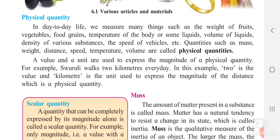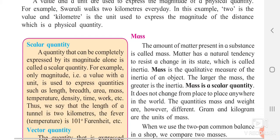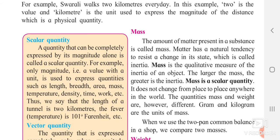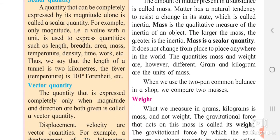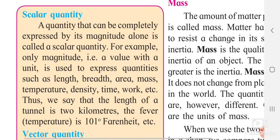These quantities are divided into two main types: scalar quantity and vector quantity. A quantity that can be completely expressed by its magnitude alone is called a scalar quantity — only magnitude means only size.